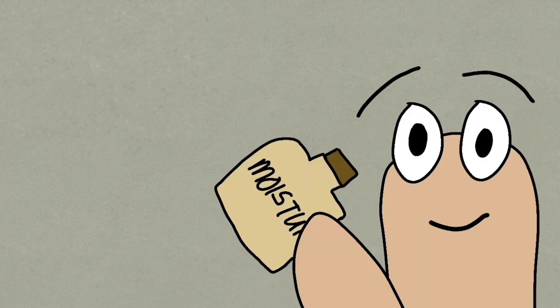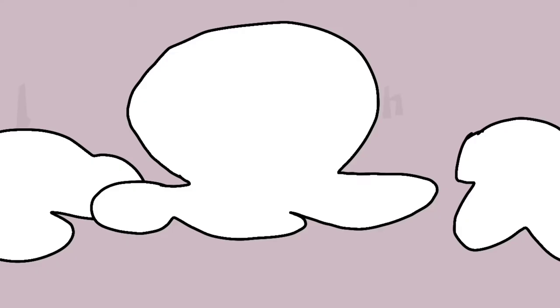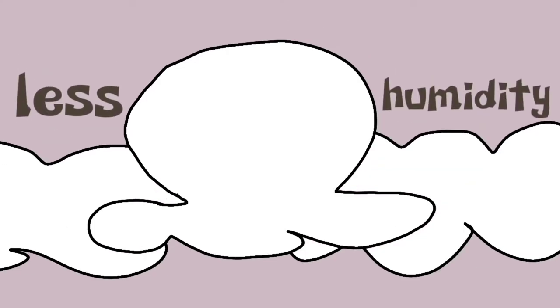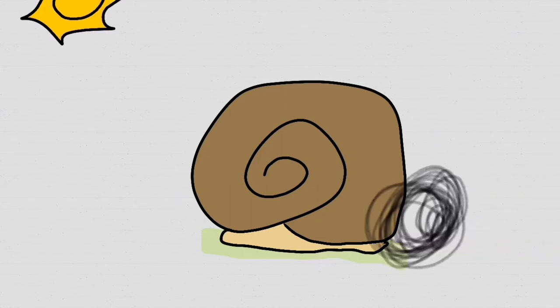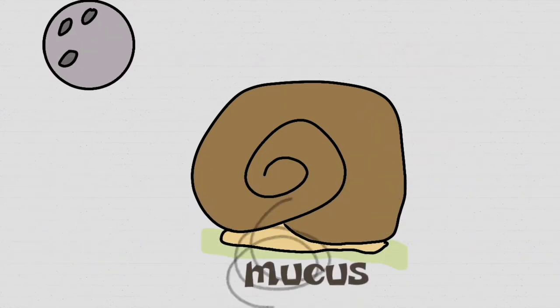Snails are sensitive to the environment. They need moisture to survive, with an ideal of 60% to 90%. So if there is less humidity, they will stay inside their spiral shells for a long period of time and secrete mucus over their bodies to protect themselves from the extreme weather.